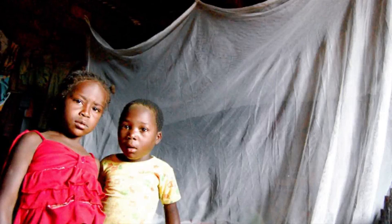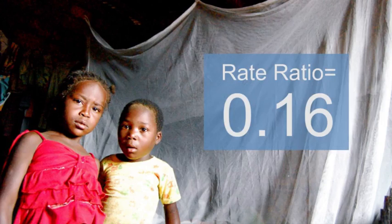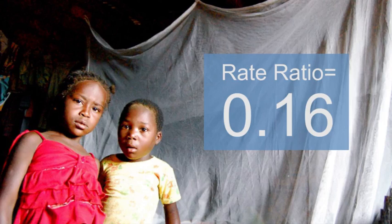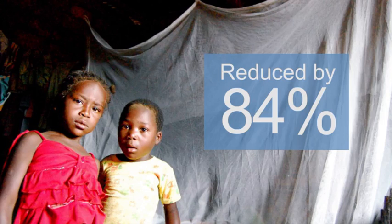Another example of a measure of association is from malaria researchers who conducted a study of mosquito nets in Mozambique. One of the measures of association, a rate ratio, the researchers calculated was 0.16. Houses treated with insecticide-treated mosquito nets had a rate of mosquito entry that was 0.16 times the rate of mosquito entry in houses without the treated nets. This can also be interpreted as an 84% reduction in entry rates of Anopheles gambiae mosquitoes.